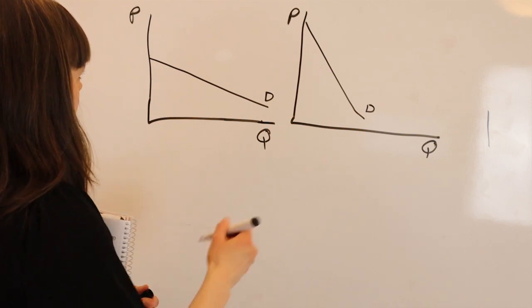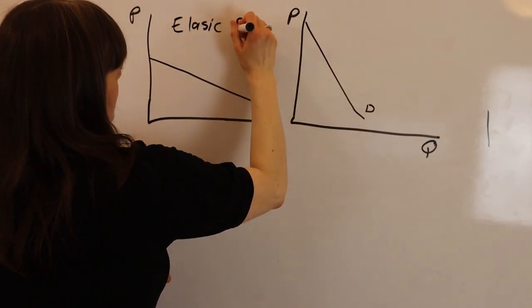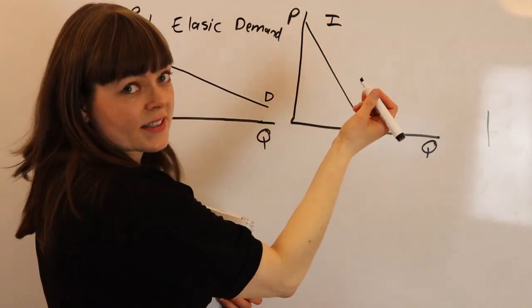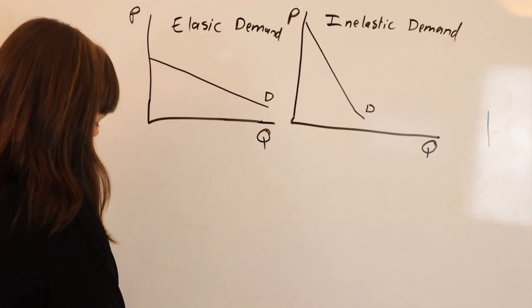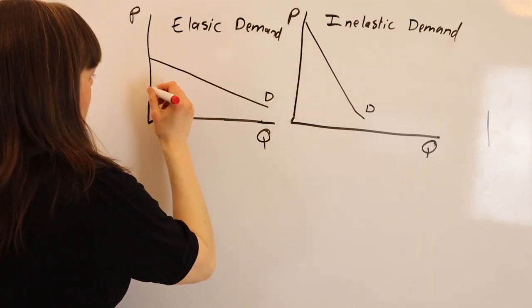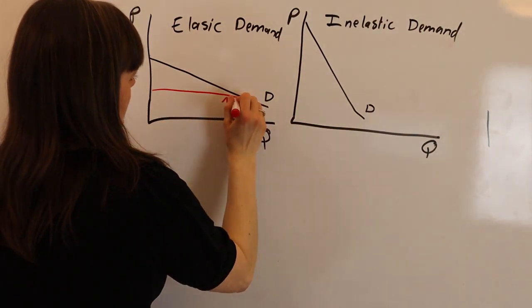So we might imagine these two firms, one has a very elastic demand and the other has a very inelastic demand. And we might imagine both firms have similar marginal costs, so the same simple marginal cost structure.